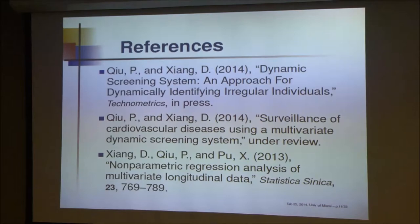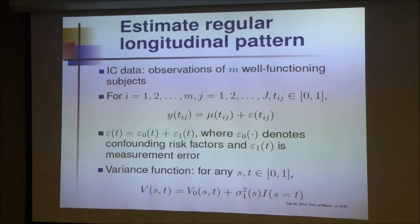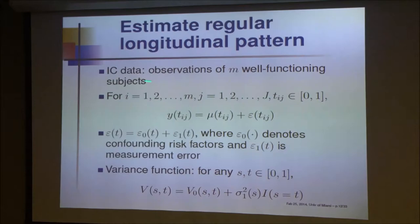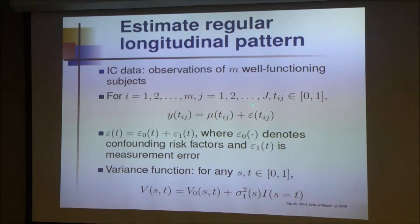Let me briefly describe each of the three steps in more detail. Step one: suppose we have in-control data — observations from a group of m healthy subjects. For simplicity I'll focus on the univariate case, though we do have papers on the multivariate case. Each subject has capital J observations, though J can depend on i. We have the in-control mean μ and variance. The longitudinal data at different time points are usually correlated, so the error term consists of two parts: ε₀ and ε₁.